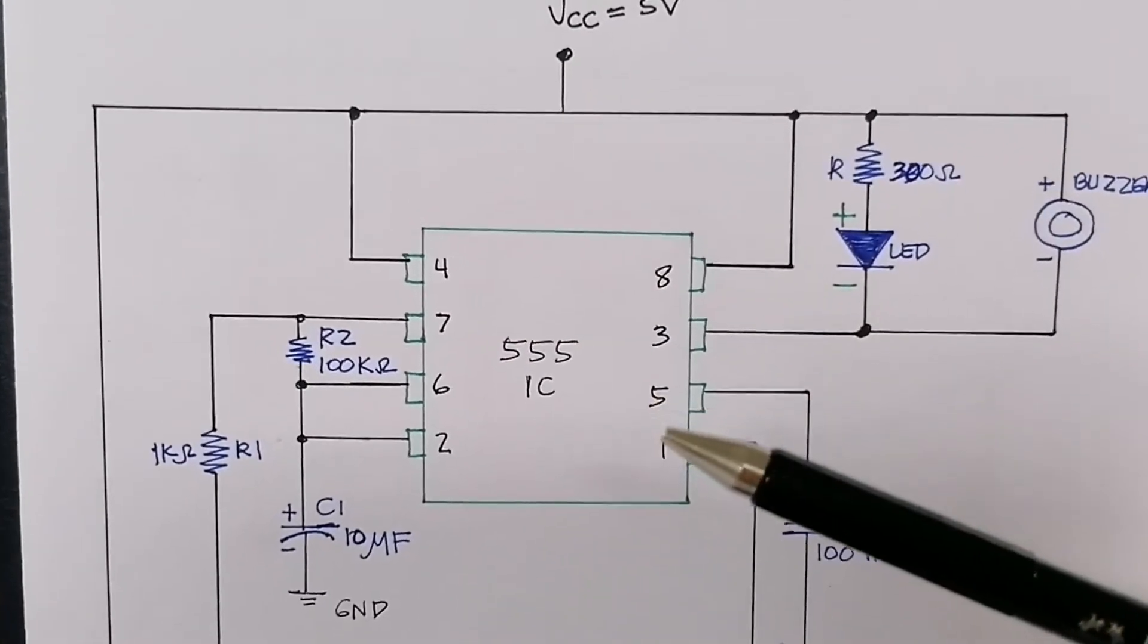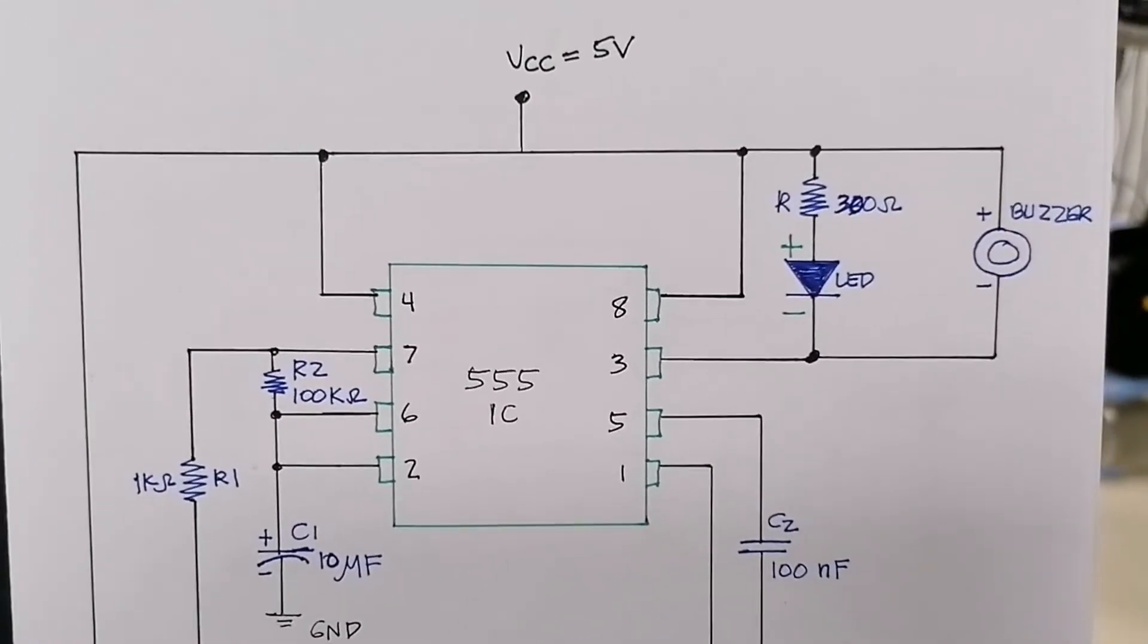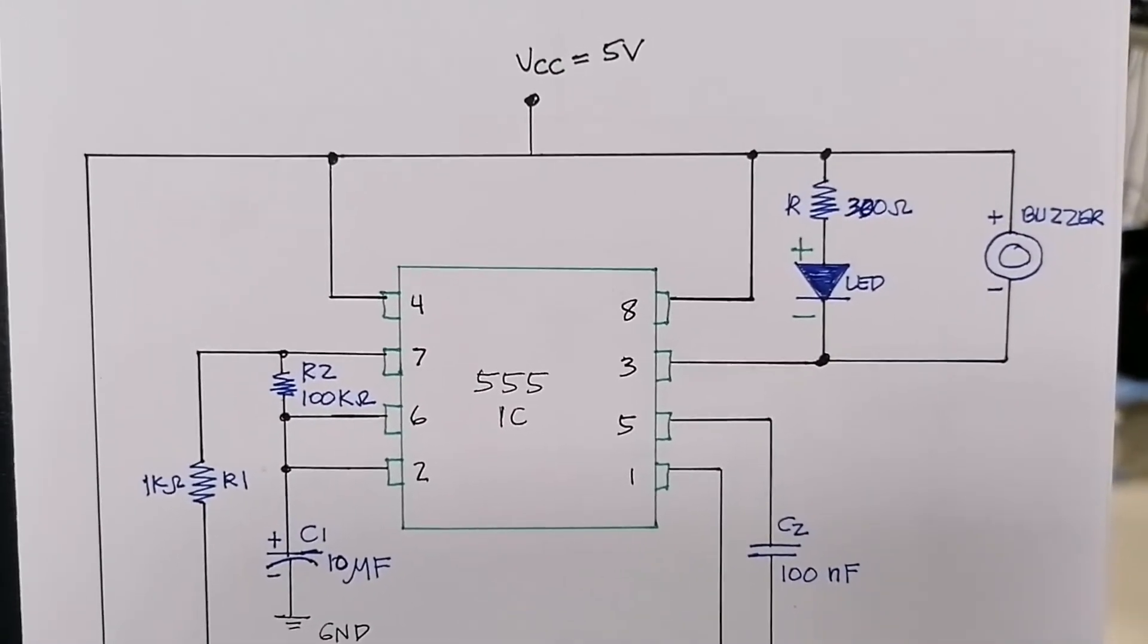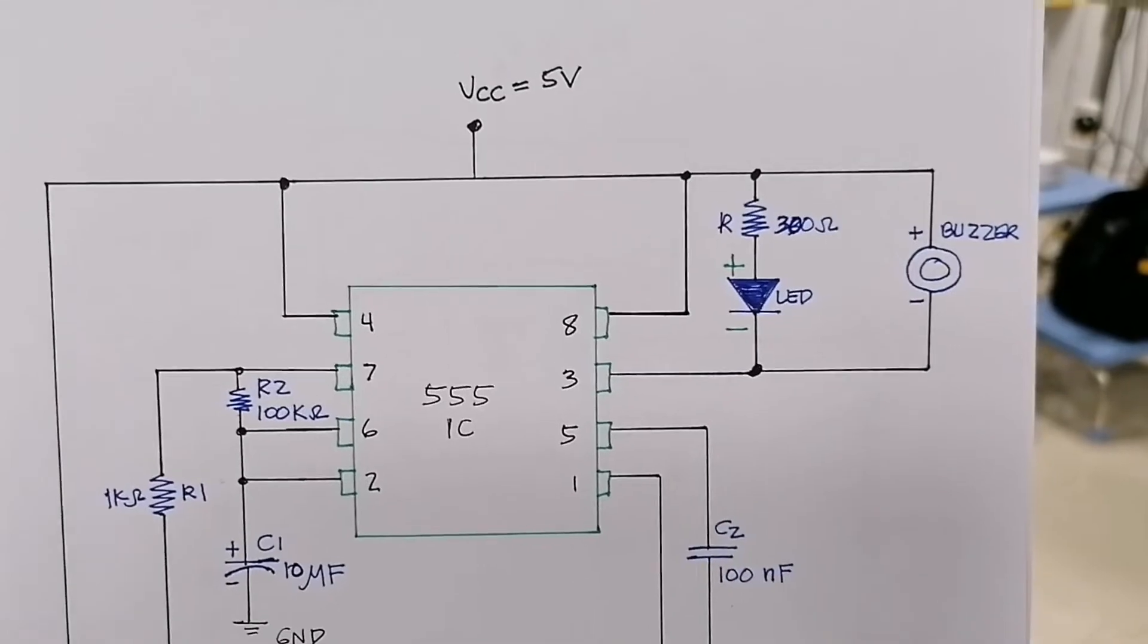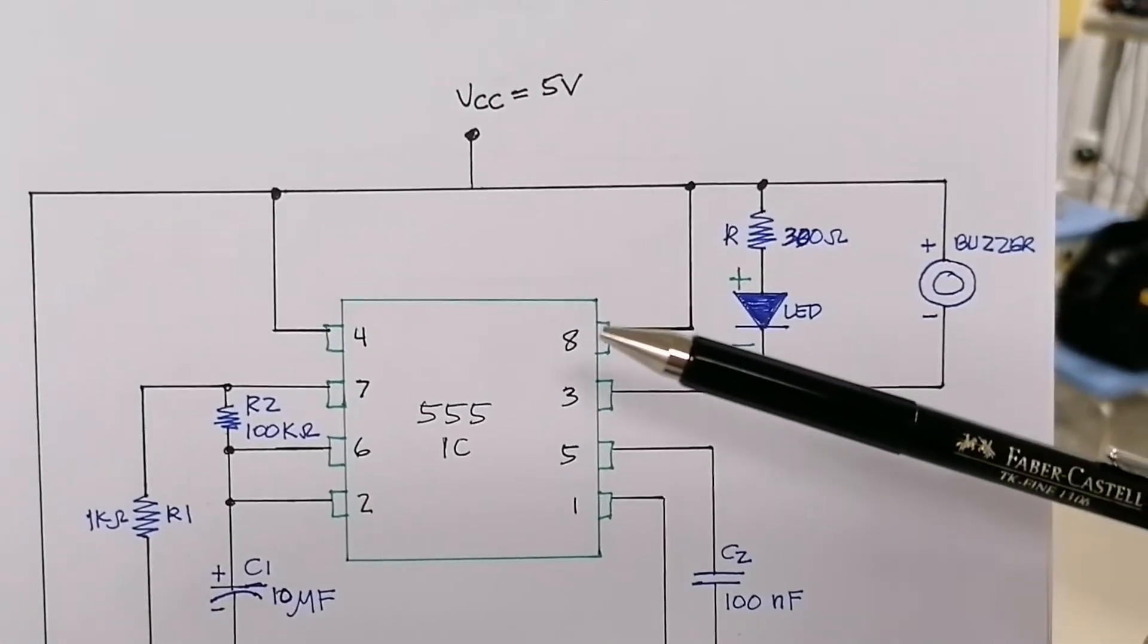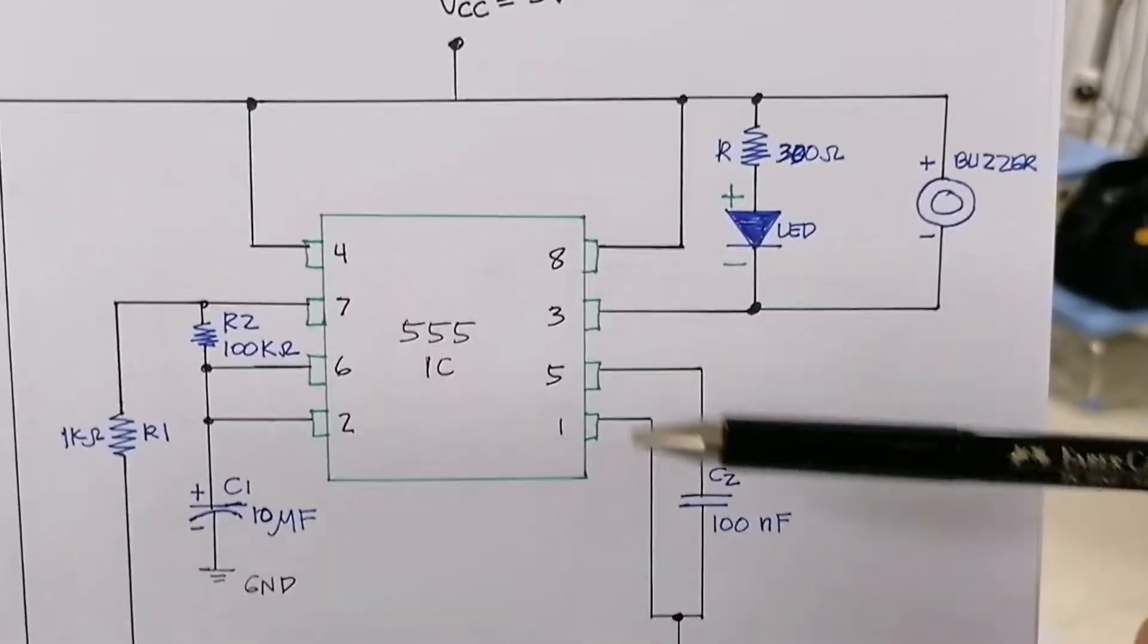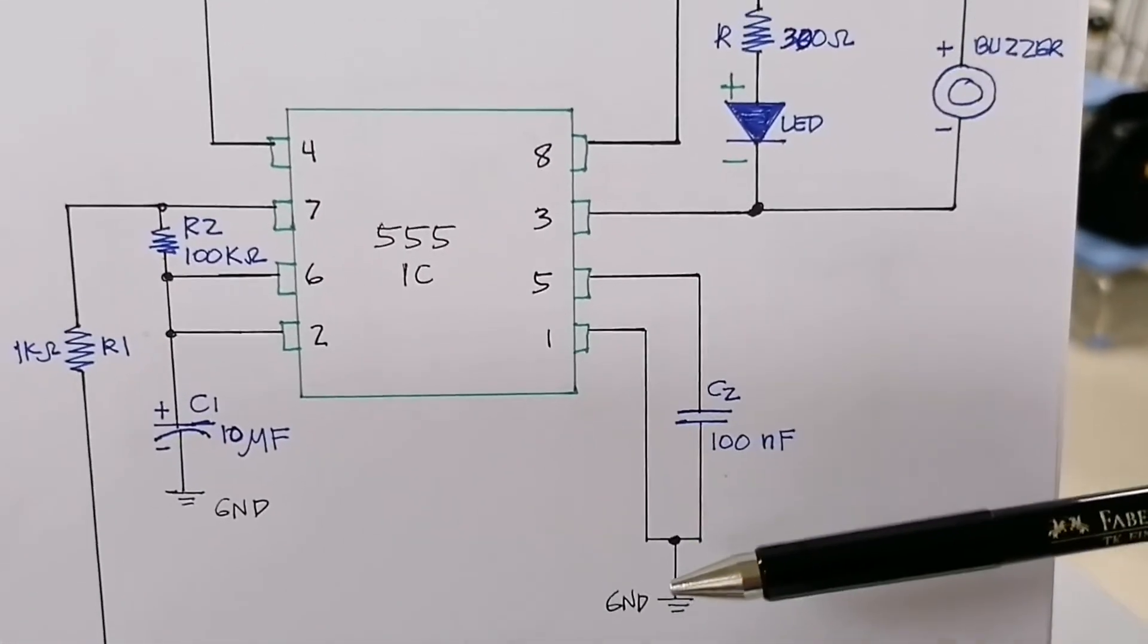This circuit uses a 555IC that is configured as an unstable multivibrator. Try to look at the circuit. The IC is already connected to the power, 5 volts, and already connected to the ground.